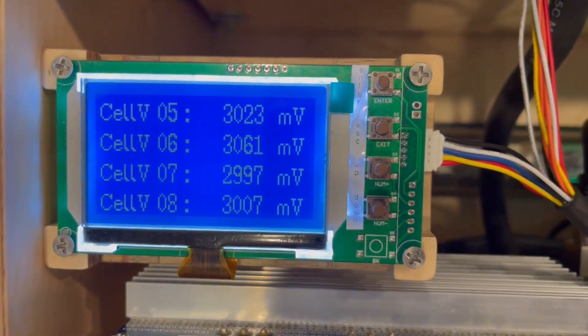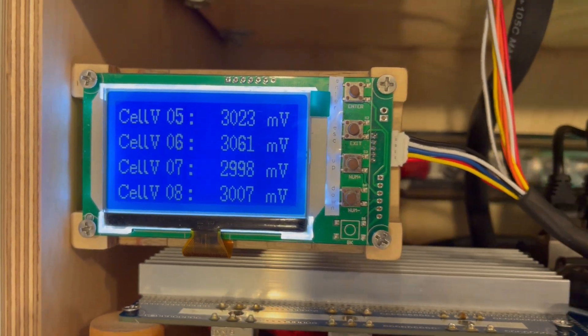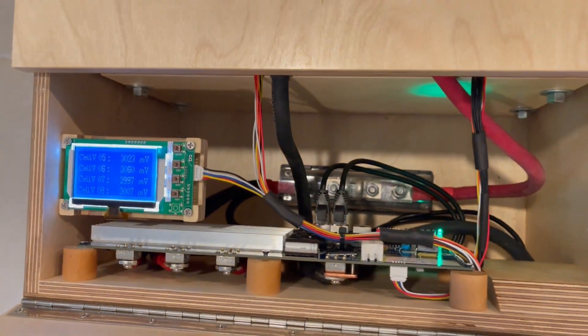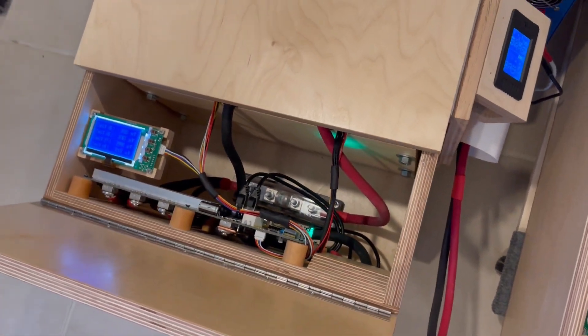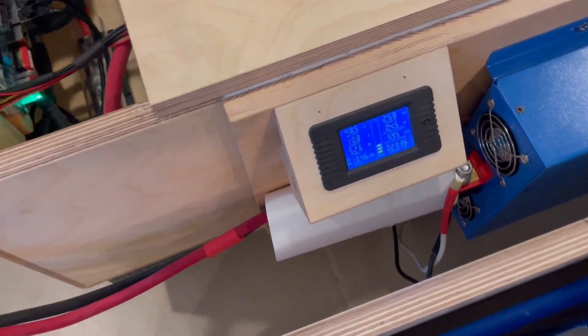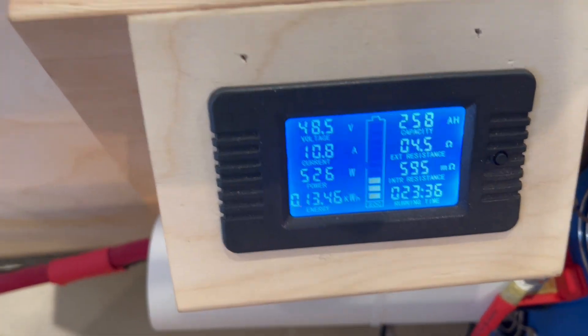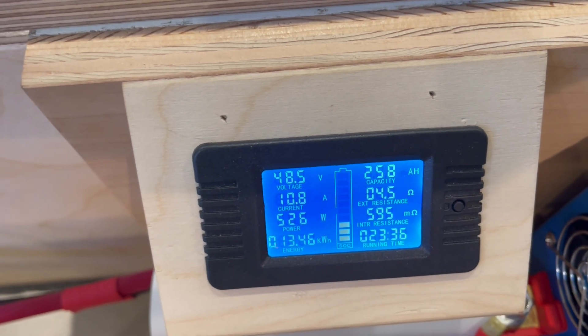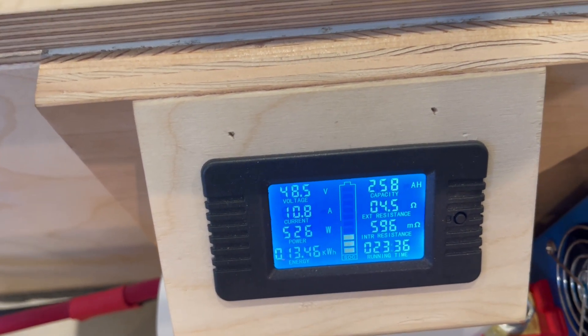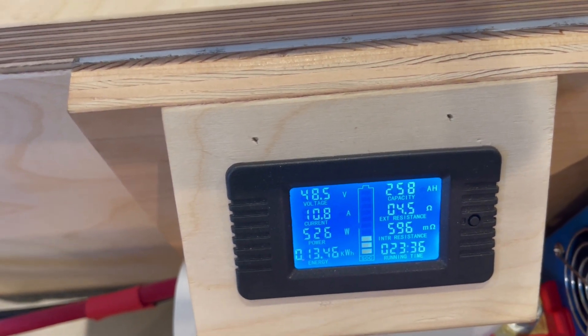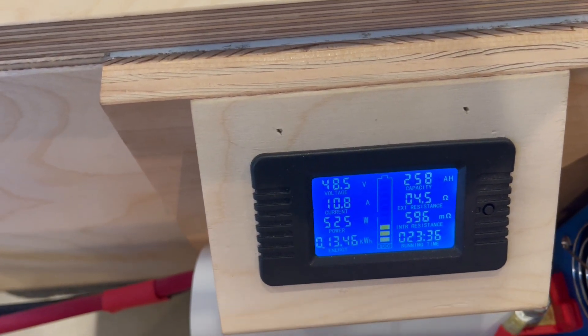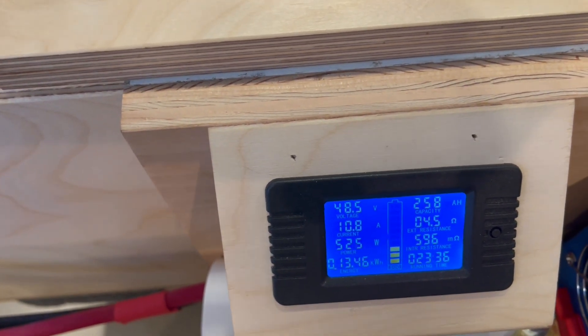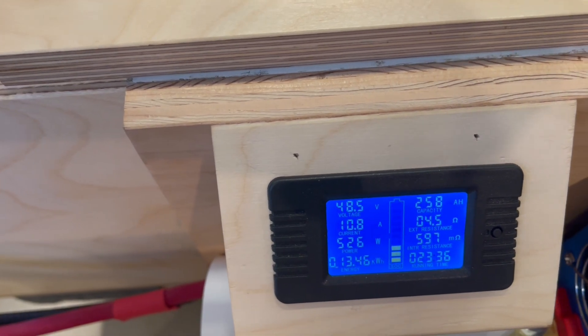So, here we are down to 2998 millivolts, headed to 2.8, and then it will shut off. And I'll be here when that happens. Based on the previous battery, the first battery with the worst cells, I got 260 amp hours out of. The second one, 261. I think I'm probably going to get about 264 out of this one.